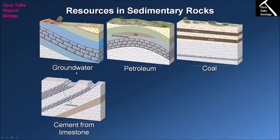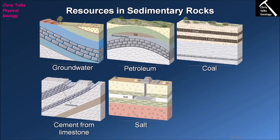We need limestone in order to make cement. Cement, which is required for building, is made from the extraction and processing of limestone. If we didn't have access to limestone we would not have cement, and human society would be in a lot of trouble, so the presence of limestone is very important when it comes to cement production.